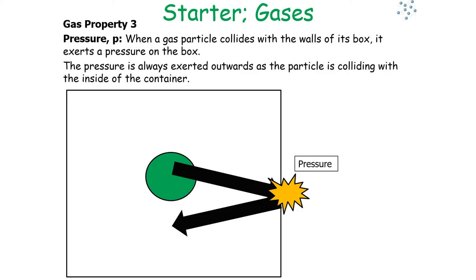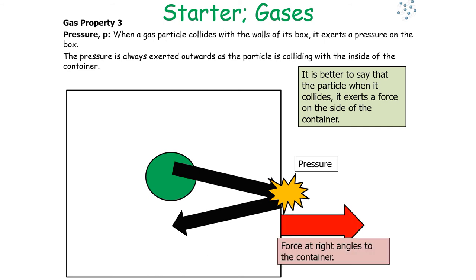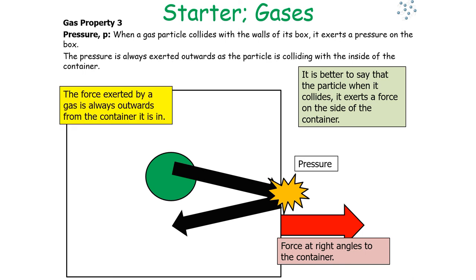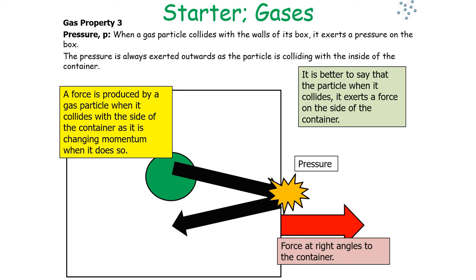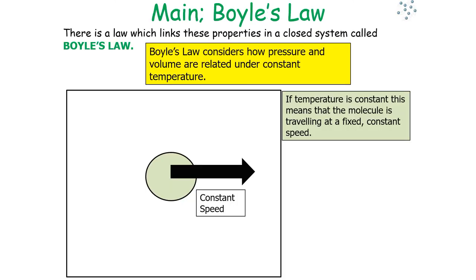Pressure occurs when gas particles collide with the walls of the container. The pressure is always exerted outwards as the gas particles collide with the inside of the container, producing a force at right angles to the container surface. So temperature is a measure of how fast gas particles move, related to their average kinetic energy. Volume is the space which gas particles move into. Pressure is a measure of the force exerted at right angles to the container when the gas particles collide with it.